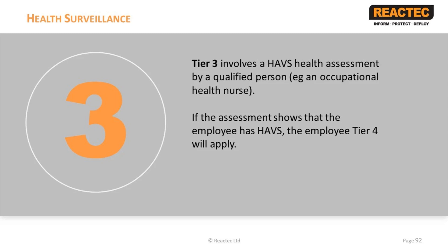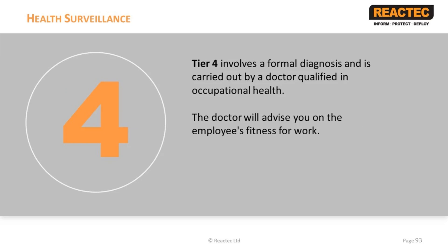The responsible person need not be qualified, but should have received training from an occupational health professional and understand the health surveillance procedures and the importance of confidentiality. Tier 3 is for a qualified person such as an occupational health nurse to provide a clinical assessment. If this shows that an employee has HAVs, then Tier 4 will apply. Tier 4 is where a formal diagnosis is made by a doctor. Formal diagnosis is required for certain actions, including reporting by employers of cases under RIDDOR 1995 and Fitness for Work recommendations.